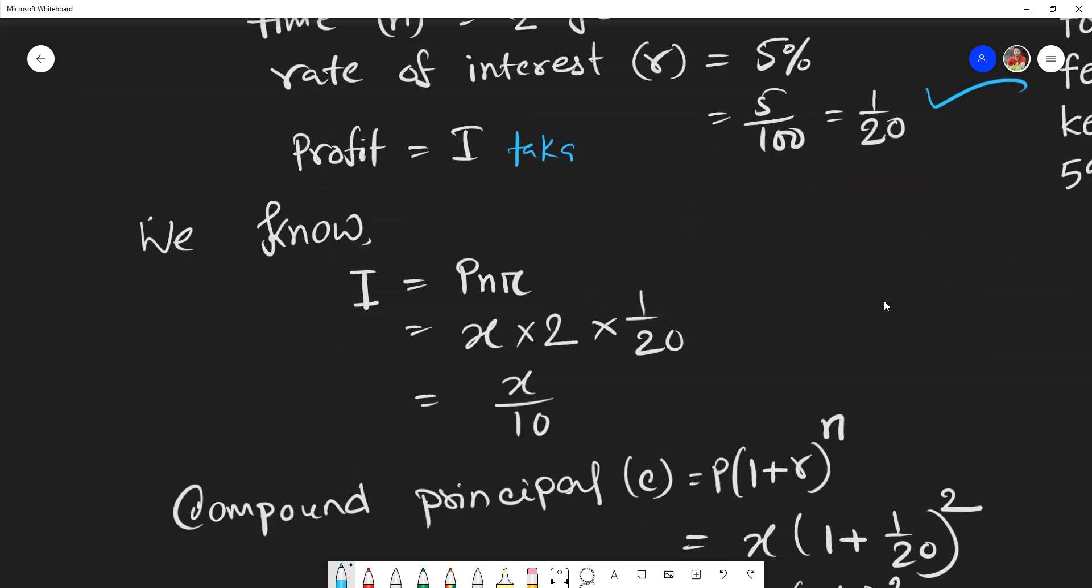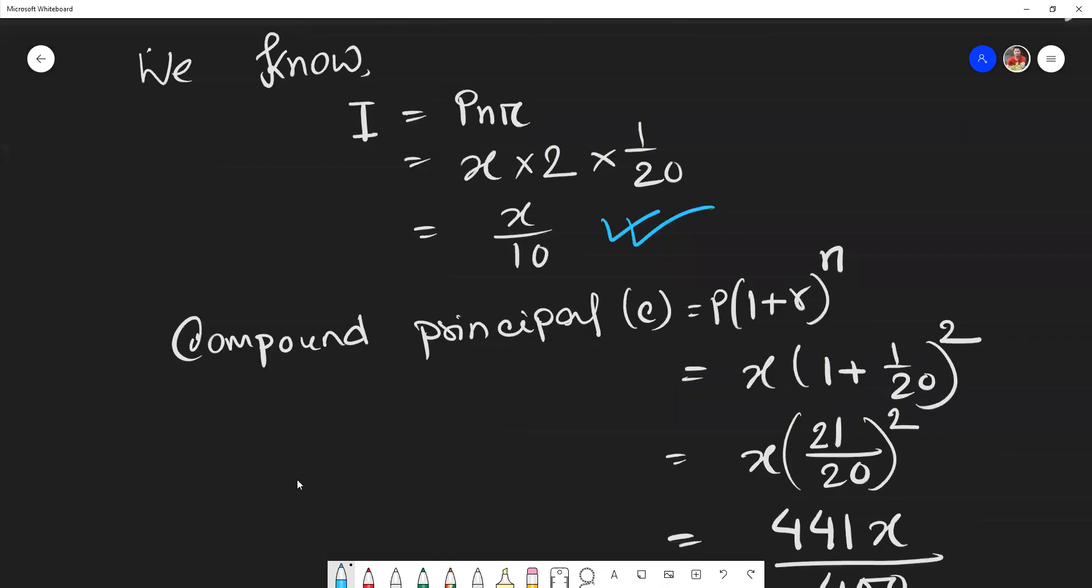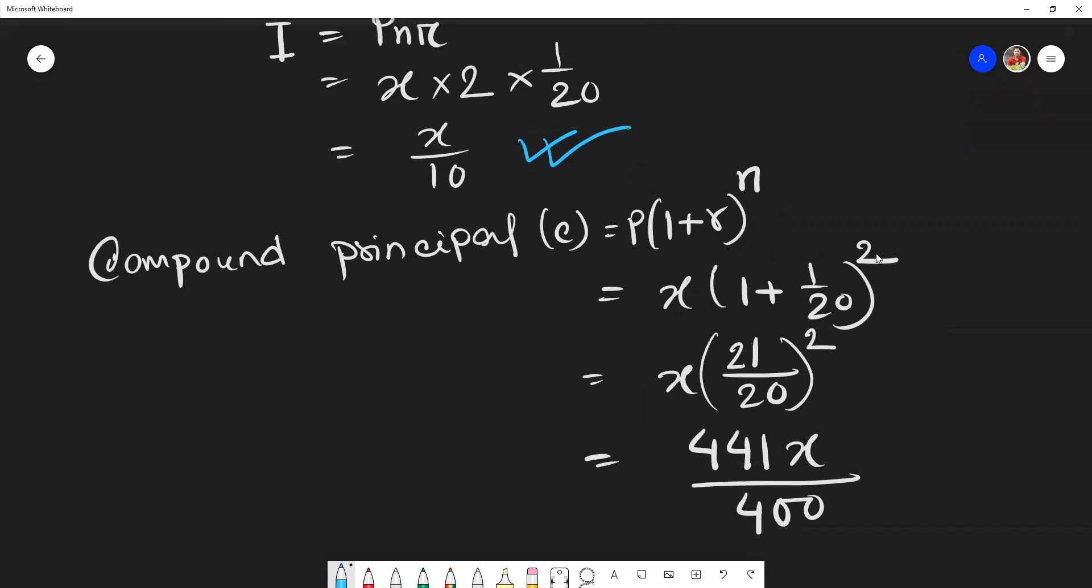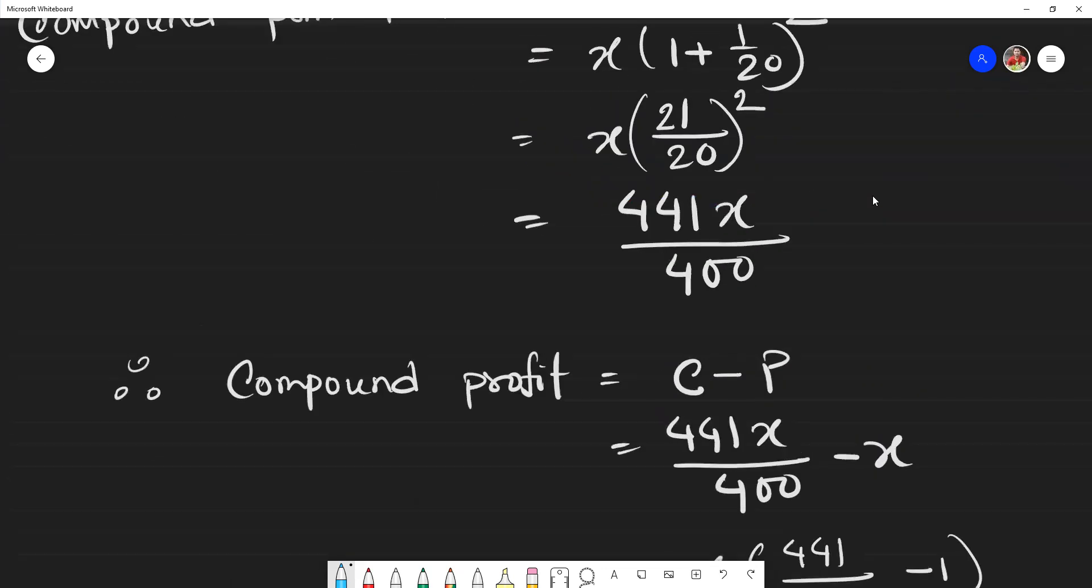First, simple profit I equals x/10. For compound principal, writing the formula: C equals P(1 + r)^n equals x(1 + 1/20)^2 equals x(21/20)^2 equals 441x/400.